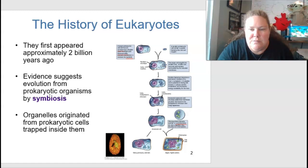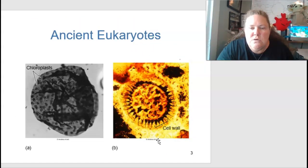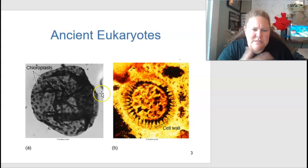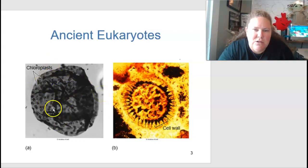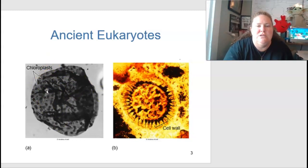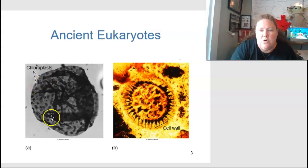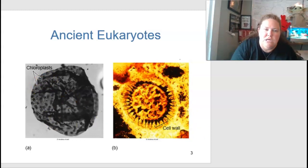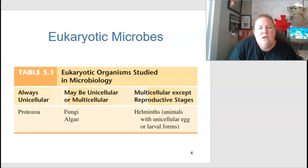Organelles originated from prokaryotic cells that became trapped inside ancient eukaryotic cells. Some of these ancient eukaryotic cells were found in China, as mentioned in the textbook. Looking at the ancient ones, they do have organelles — chloroplasts, cell walls, etc. — and these are very, very old eukaryotic cells that we've been able to study.